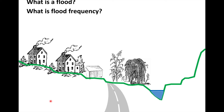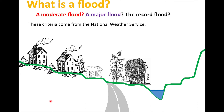Let's start with the really basic question: what is a flood? As hydrologists and geomorphologists, we define a flood as anytime a river overtops its banks. But the National Weather Service defines several other types of floods — moderate floods, major floods — and as we get into talking about extreme events, we'll also talk about record floods.